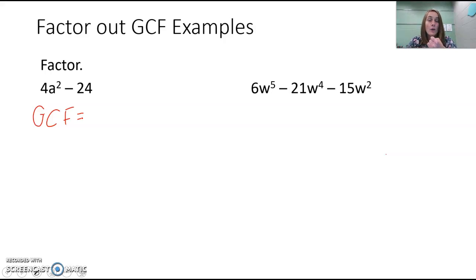4, you have 1. We're not going to factor out 1. 2 and 4. 2 goes into 24, but so does 4. So we're going to factor out 4. And then they don't have any variables in common. It's just a squared. So we're only going to factor out 4.